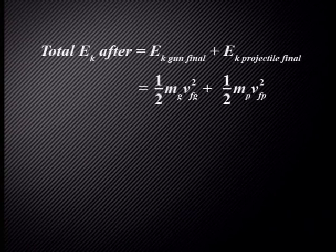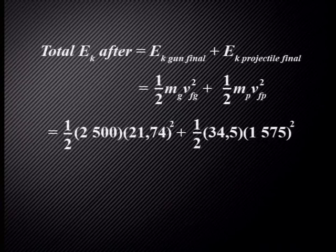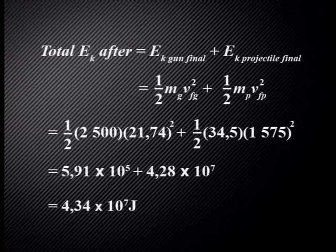Which is equal to a half times the mass of the gun times the final velocity of the gun squared plus a half times the mass of the projectile times the final velocity of the projectile squared. When we substitute in what we know from our list, we have a half times 2,500 times 21.74 squared plus a half times 34.5 times 1,575 squared. This gives us 5.91 times 10 to the 5 plus 4.28 times 10 to the 7. The total kinetic energy after the explosion is 4.34 times 10 to the 7 joule.